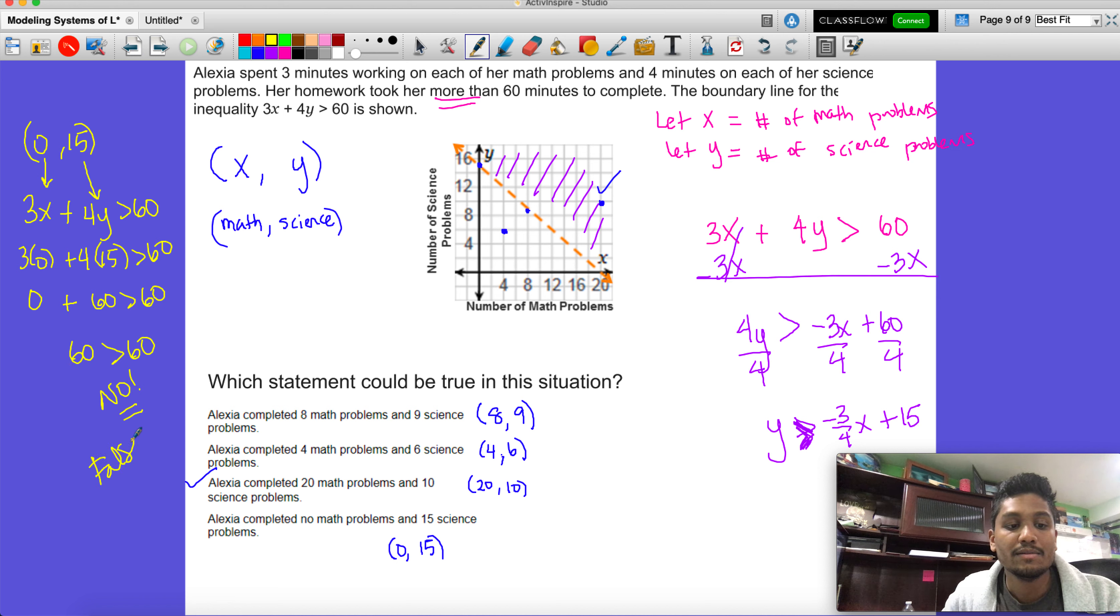That's why this is not a solution. The other one that we had issues with was this one: 8 comma 9. Let's just take a second and do that. We get 3x plus 4y is greater than 60. Three times 8 plus 4 times 9 is greater than 60. So 24 plus 36 is greater than 60. When you add them up, 60 is greater than 60 - we know that that's false.